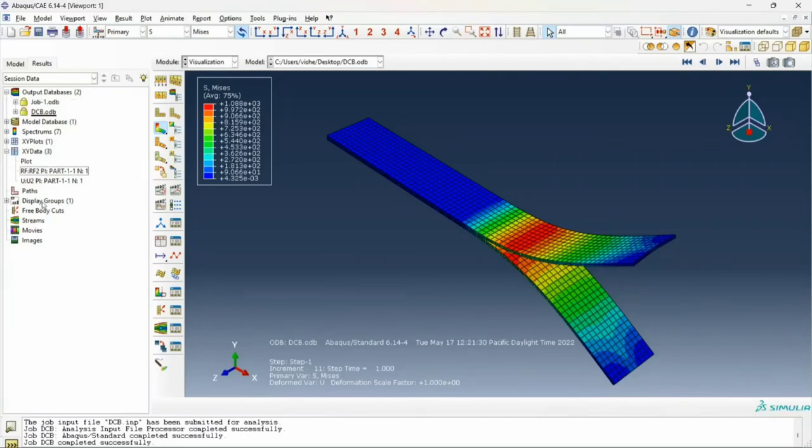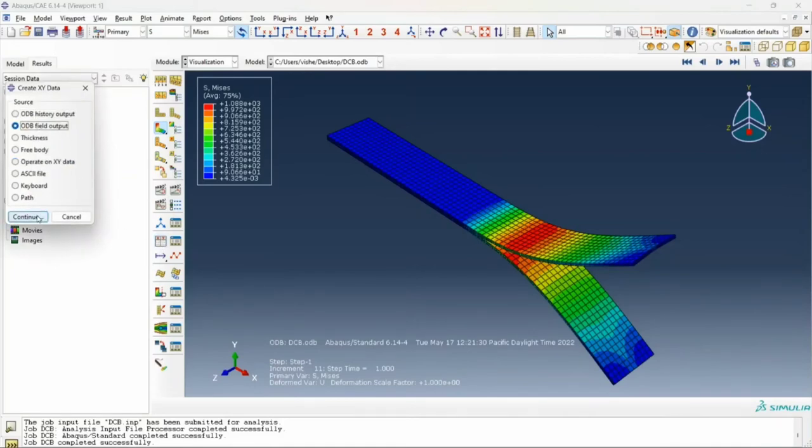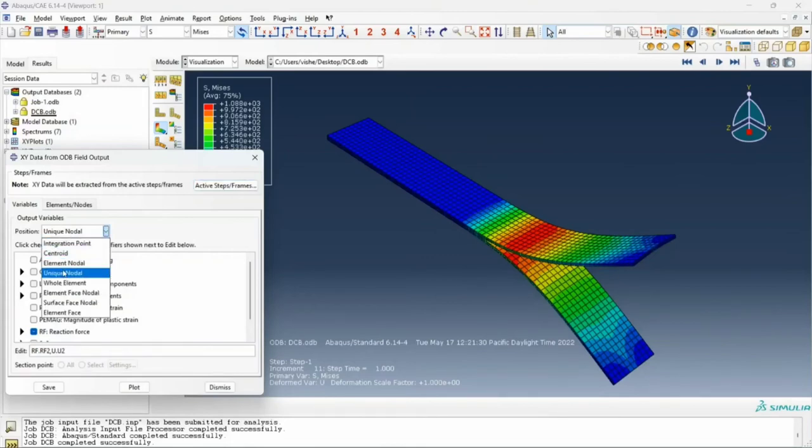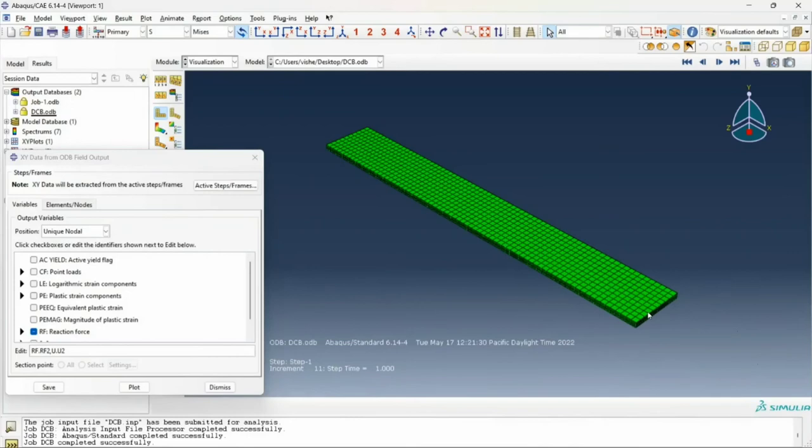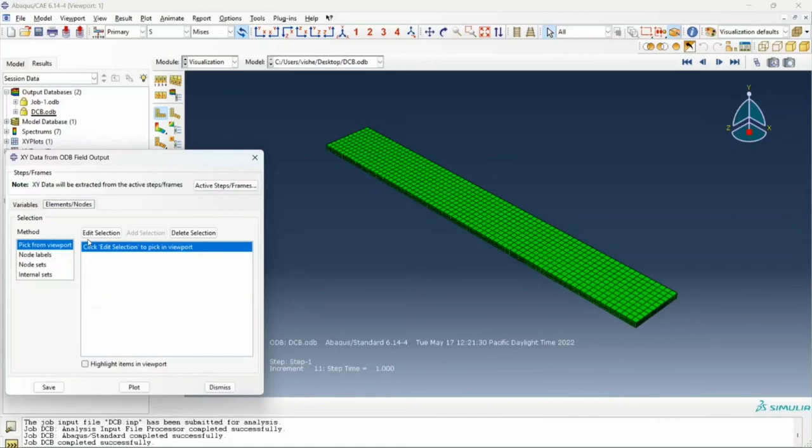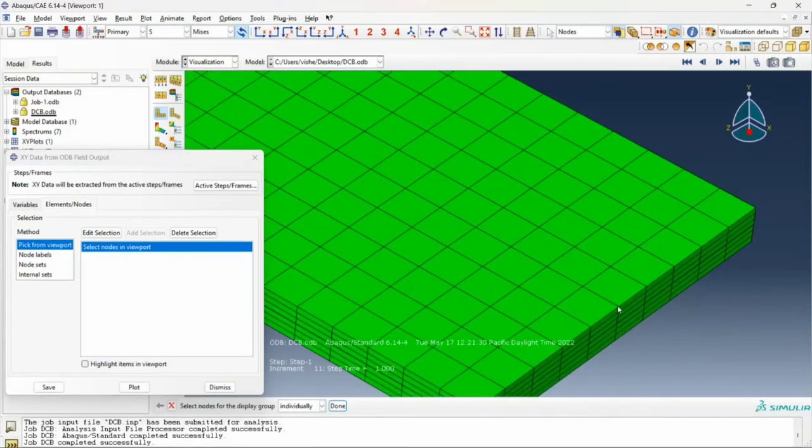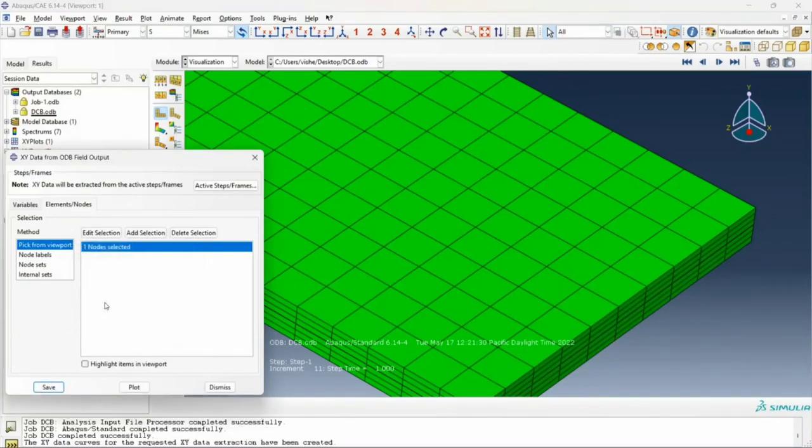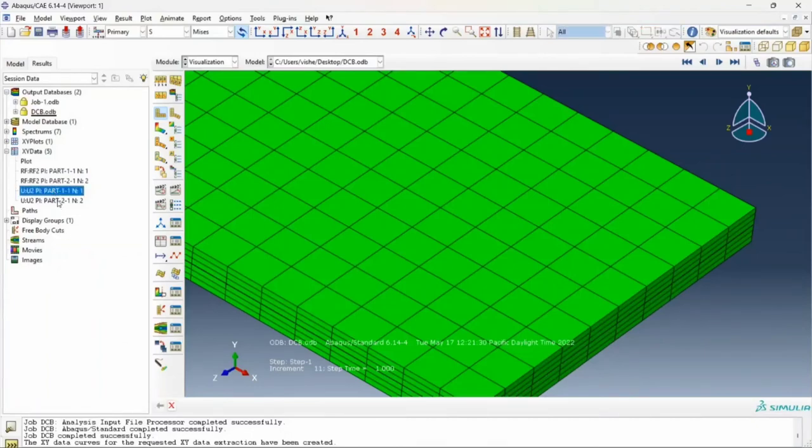For that, we'll click on XY, ODB field output, unique nodal. What I want to do here is find out the force as a function of the displacement for the center node. I click on RF2, U2, and select the node I want these parameters for. Let's say I want it for this node. I click save and click OK. I've received these two XY data.